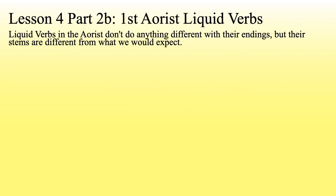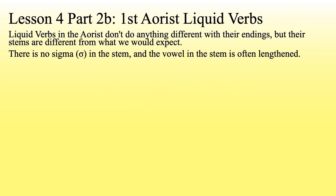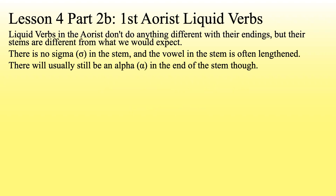Liquid verbs in the aorist don't do anything different with their endings, but their stems are different from what we would expect. We would expect to see a sigma alpha and we don't. There is no sigma in the stem and the vowel in the stem is often lengthened. There will usually still be an alpha at the end of the stem, though.